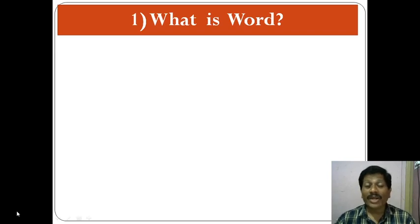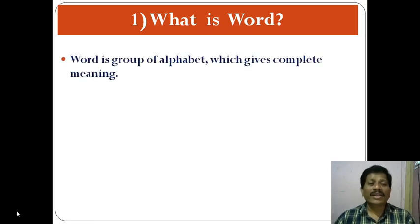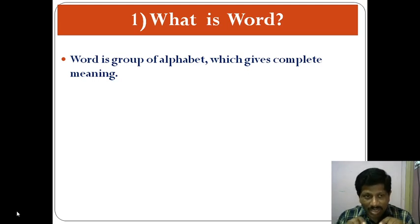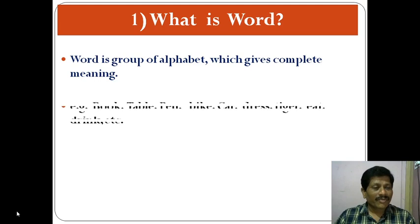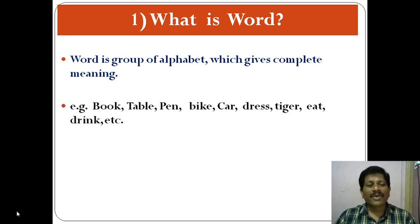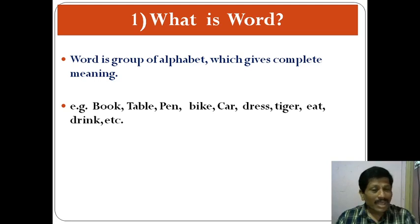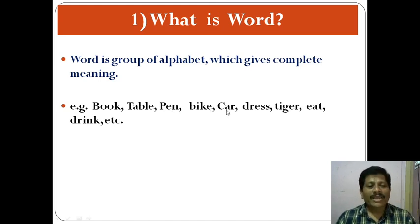The first topic we are going to study is: what is word? As you know better, in your mother tongue a word is a group of alphabets — alphabet means letters — which gives complete meaning. Your grouping of alphabets must give complete meaning and should not confuse you. That mixture or group is called a word. For example: B-O-O-K, book — if you read it, an image of a book will come before you. Similarly: table, bike, car, dress, tiger, eat, drink, etc.